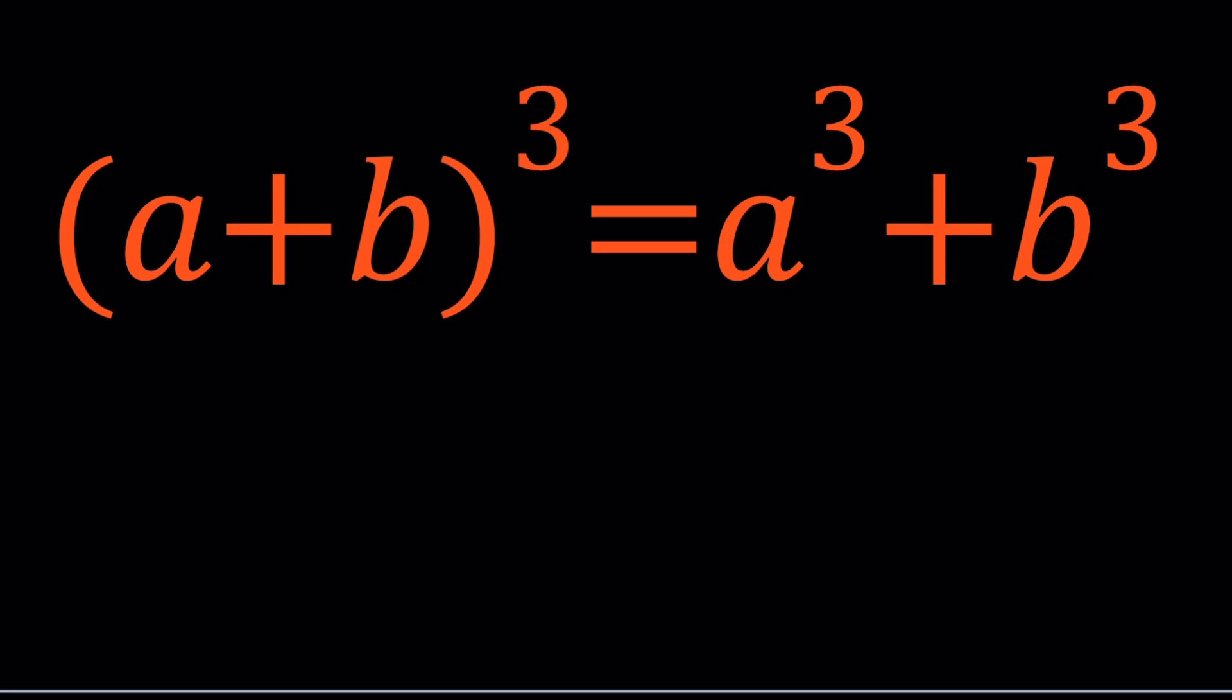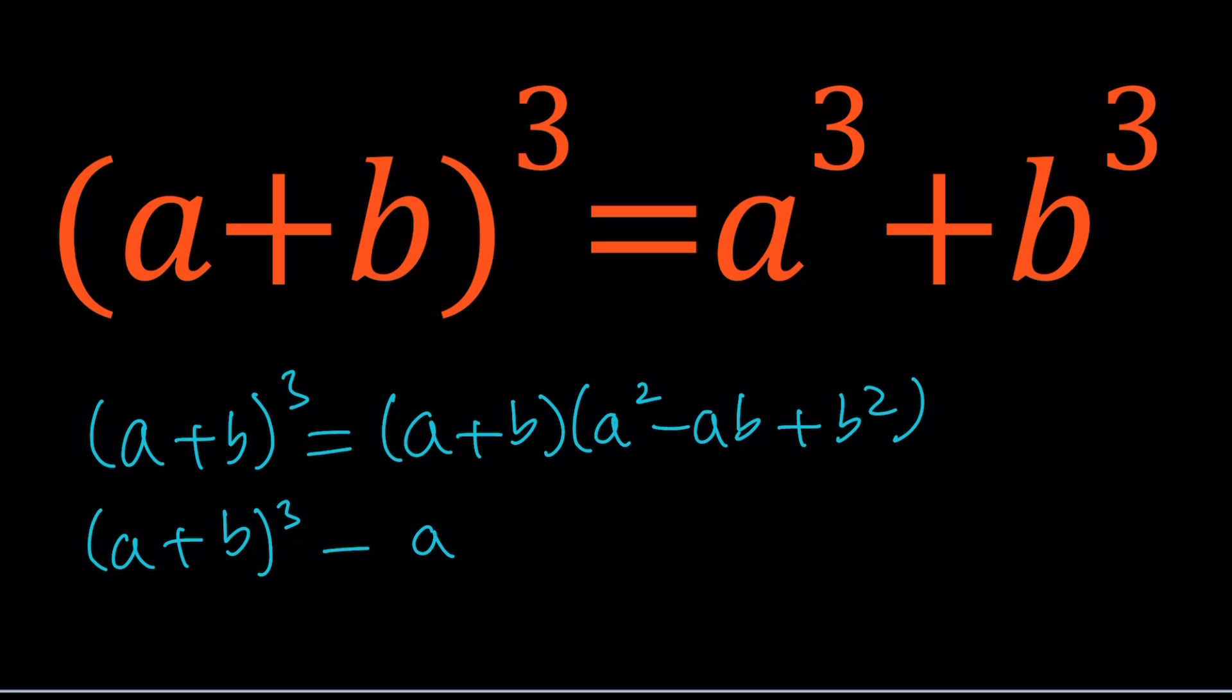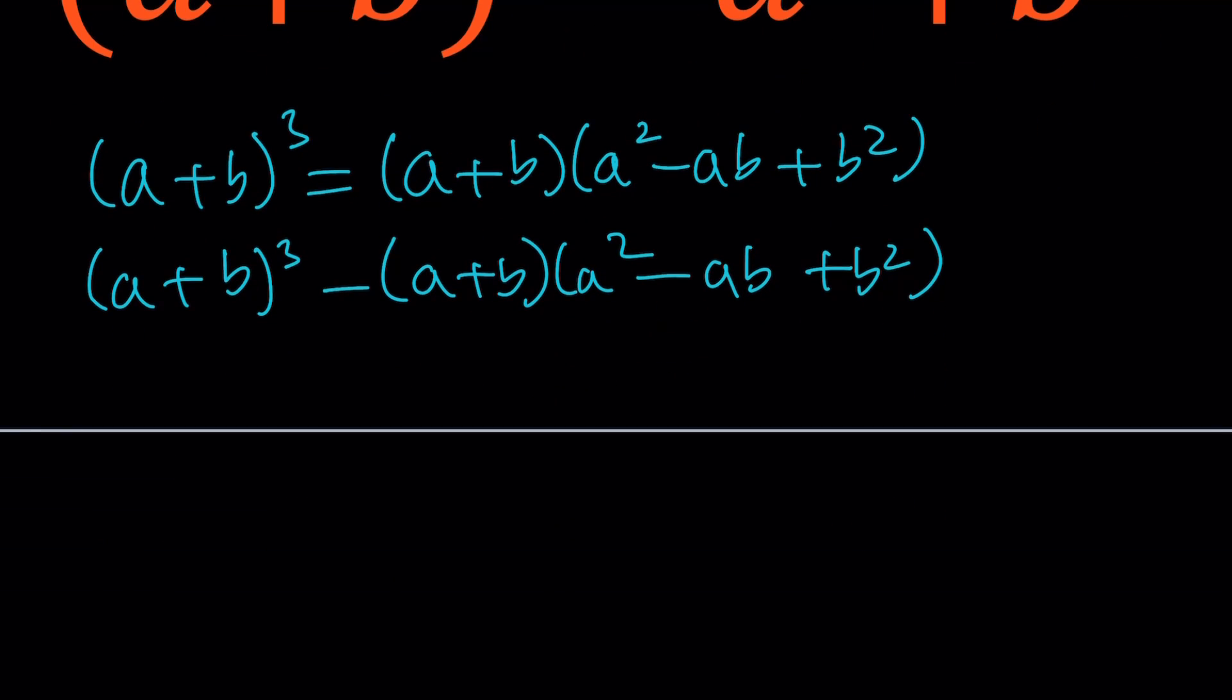First of all, I can go ahead and factor the right-hand side, which is a sum of two cubes. So I can factor it and then put everything on the same side. Now a plus b is a common factor. Let's go ahead and take it out.